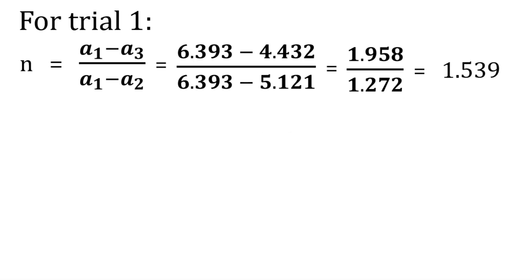For the first trial, the value of A1, A2, and A3 are found. The ratio is calculated and is equal to 1.539. The refractive index is the ratio of real thickness to apparent thickness of the glass slab. It is a unitless quantity.